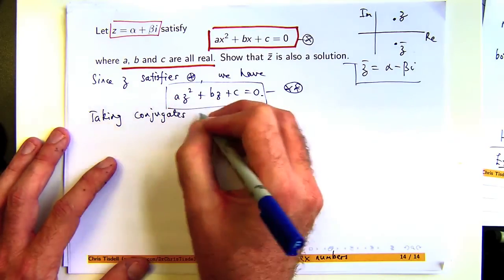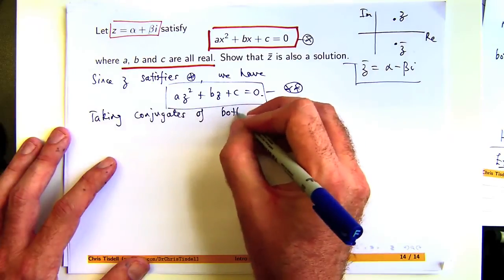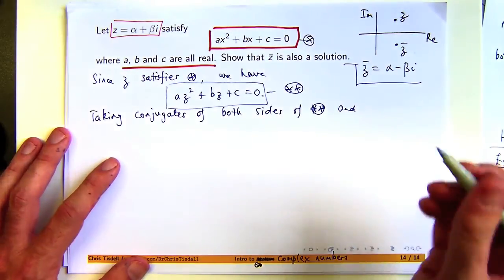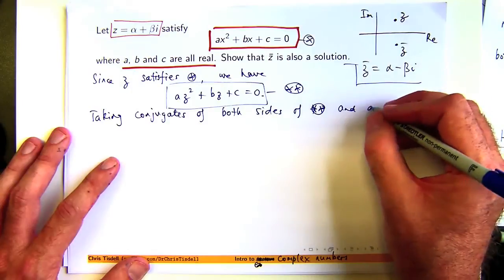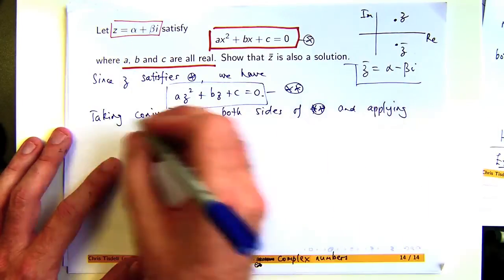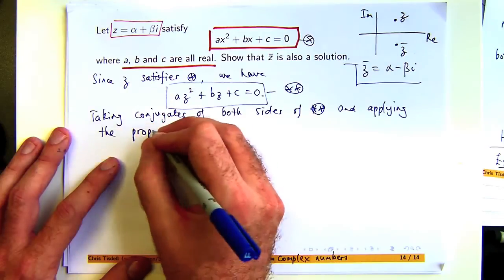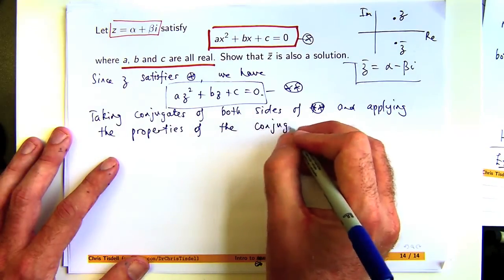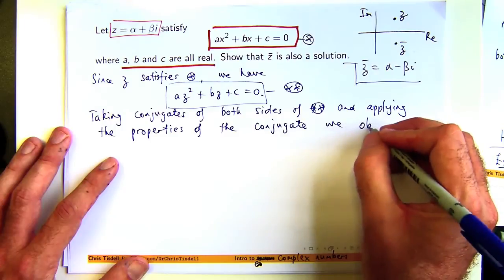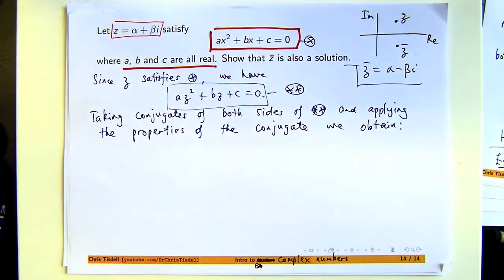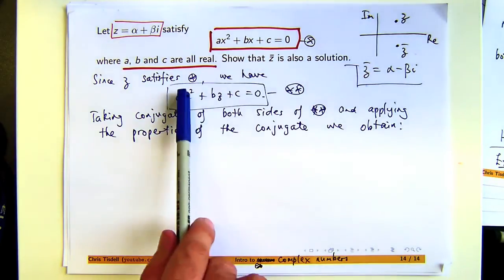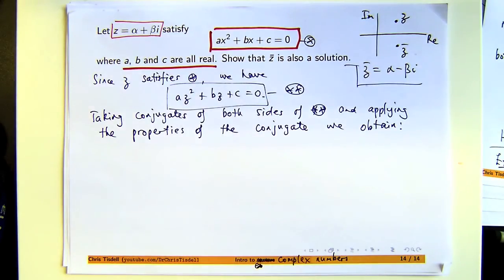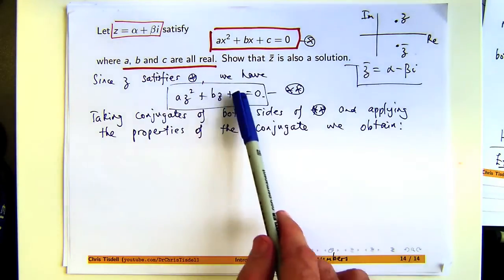Taking conjugates of both sides of double star and applying the properties of the conjugate, what are we going to obtain? Well, I'm going to take the conjugate of both sides. On the right-hand side, the conjugate of zero, the conjugate of a real number, is just itself. So the conjugate of zero is zero. And then I can work on this side.